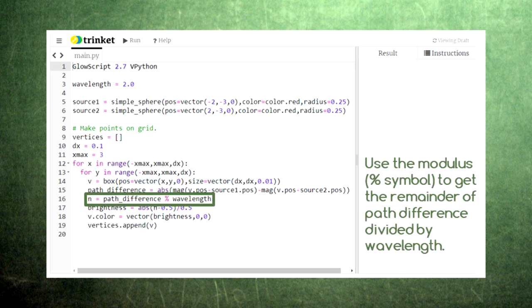Remember, we only care about how this distance compares with the wavelength, so we use a mathematical operation called the modulus. The modulus takes the first number, divides it by the second number, and gives you the remainder of that division.